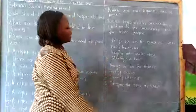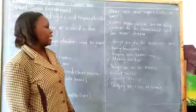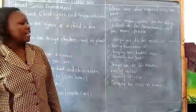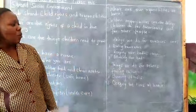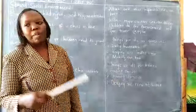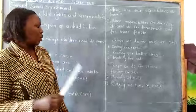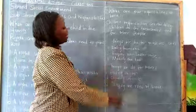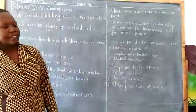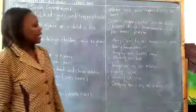It is also your responsibility to keep your body clean. The ways that we keep our bodies clean: one is by bathing, brushing teeth, combing hair, and also keeping our nails short. It is also our responsibility to make our beds.